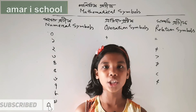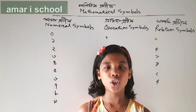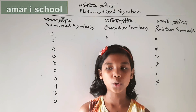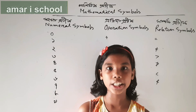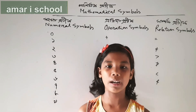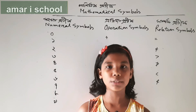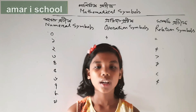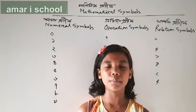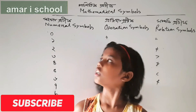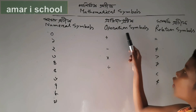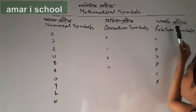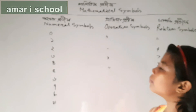Friends, you know our elementary mathematics book has mathematical symbols — called 'ganathik pratik' or mathematical symbols. Do you know the English of these mathematical symbols? No problems, let's learn them! Mathematical symbols are of different types: numeral symbols, operation symbols, and relation symbols. Today let's learn the English names of the numeral symbols.